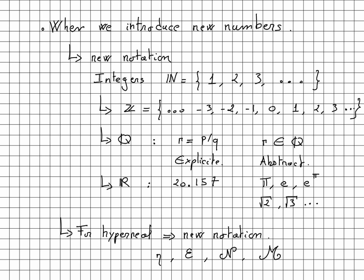Of course, when you introduce new numbers, we need to introduce new notation, which simply consists of putting a minus in front of an integer. When we define the rational number, here too, we have to introduce a new notation. It can be explicit by writing p over q, where p and q are both integers.